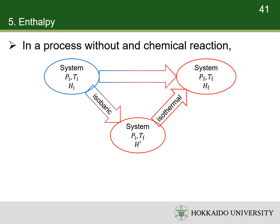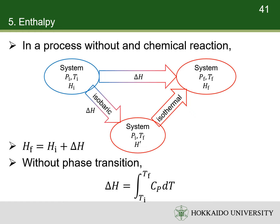The change of a state function in a process without chemical reactions is equal to that in a two-step process, in which one step is isobaric while the other is isothermal. Since the enthalpy change in the isothermal step is negligible, the overall enthalpy change equals the enthalpy change in the isobaric step. Thus, the enthalpy of the final state can be calculated from the initial enthalpy and the heat of the isobaric step. If there is no phase transition, the enthalpy change in the isobaric process is the integral of heat capacity at constant pressure with respect to temperature from the initial to the final temperature.